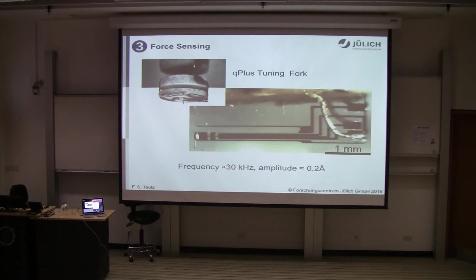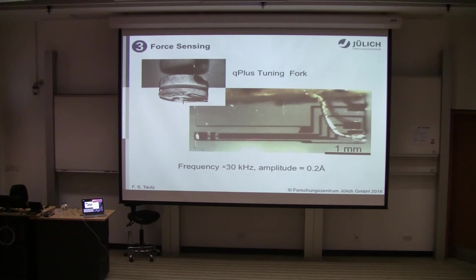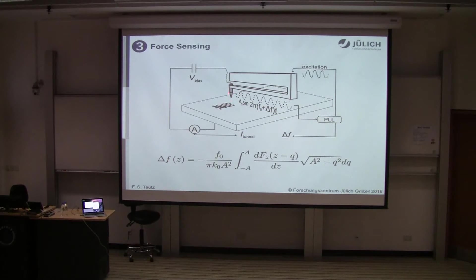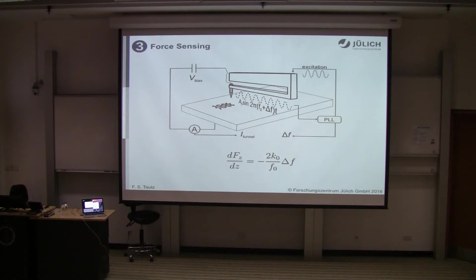The third prerequisite is force sensing, because as we lift the molecule from the surface we must measure the force. We use a tuning fork AFM — a dynamic AFM. The tuning fork has a frequency of about 30 kilohertz and oscillates with very small amplitudes less than one angstrom. When the tip feels some attraction, this leads to a frequency shift in the eigenfrequency of the tuning fork. If the amplitude is very small, this frequency shift is directly proportional to the gradient of the force in that direction — the stiffness of the junction — and from the stiffness you can calculate back to the force.